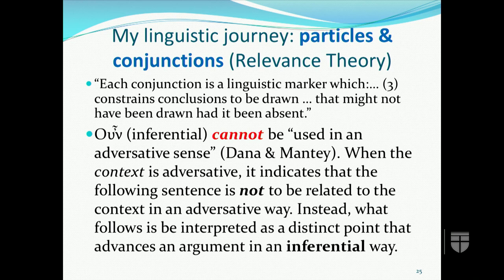The third part of the definition — that it constrains conclusions to be drawn that might not have been drawn had the conjunction been absent — also leads to the rejection of assertions that 'oun' has an adversative sense as Dana and Mantey claim. Instead, inferential 'oun' would be understood to constrain what follows to be processed as a distinct point that advances an argument in an inferential way, not as adversative.